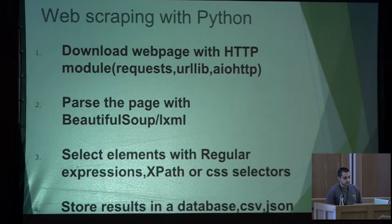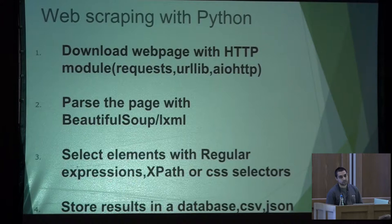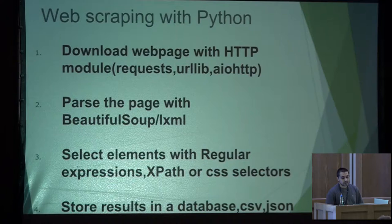These are the main steps for web scraping with Python. The first step is to download the web page with an HTTP module — we can use requests, urllib, or AIOHTTP. In the second step, we parse the page with a parser — we can use BeautifulSoup or specific parsers like XML, HTML5, and so on. In the third step, we select the elements we want to extract using regular expressions, XPaths, or CSS selectors. In the fourth step, we can store the results in a database, CSV, or JSON format.